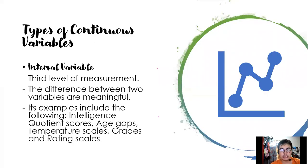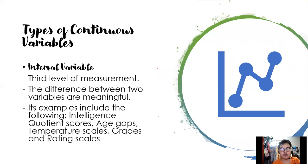When we say interval variable, it is the third level of measurement. The difference between two variables is meaningful. Examples include intelligence quotient scores, age gaps, temperature scales, grades, and rating scales. We can compare IQ scores from last month to this month, or the IQs of different people. The same applies to age gap — we compare the ages of each person. And with temperature scales, it is a matter of comparison.